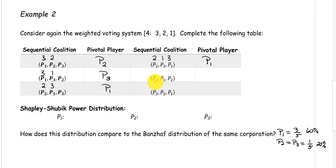The sequential coalition containing player 3, player 1, player 2: player 3 has a weight of 1, player 1 has a weight of 3, and now we have met our quota of 4. So player 1 is the pivotal player.